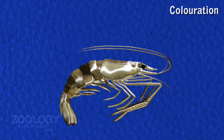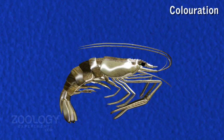Coloration: Prawns are semi-transparent and white at young stages, but adults are differently tinted according to the species. Generally, the color is dull pale blue or greenish white, with brown, orange, and red patches.